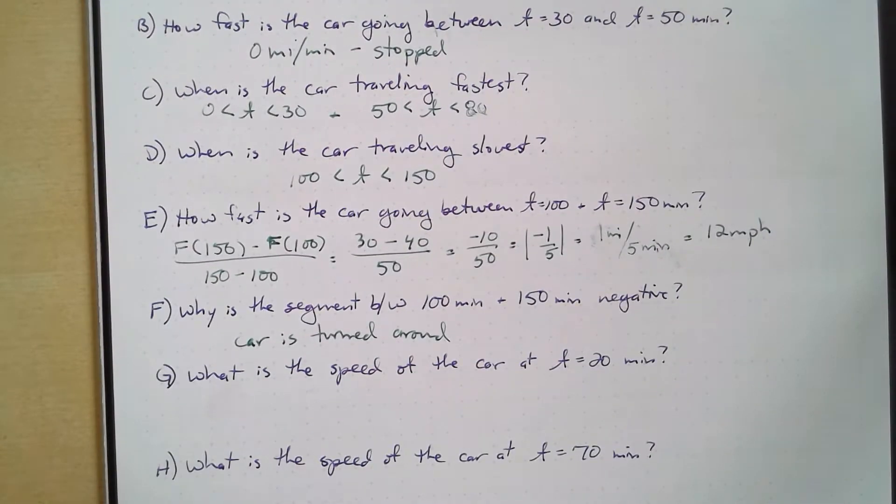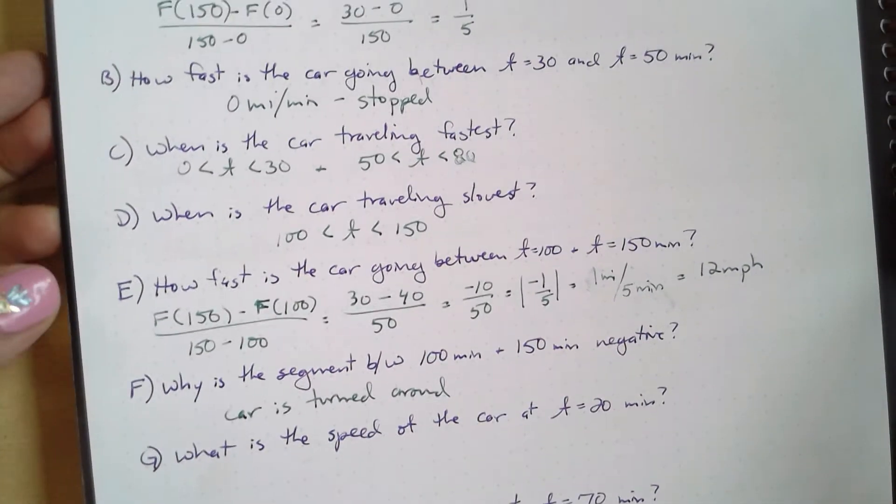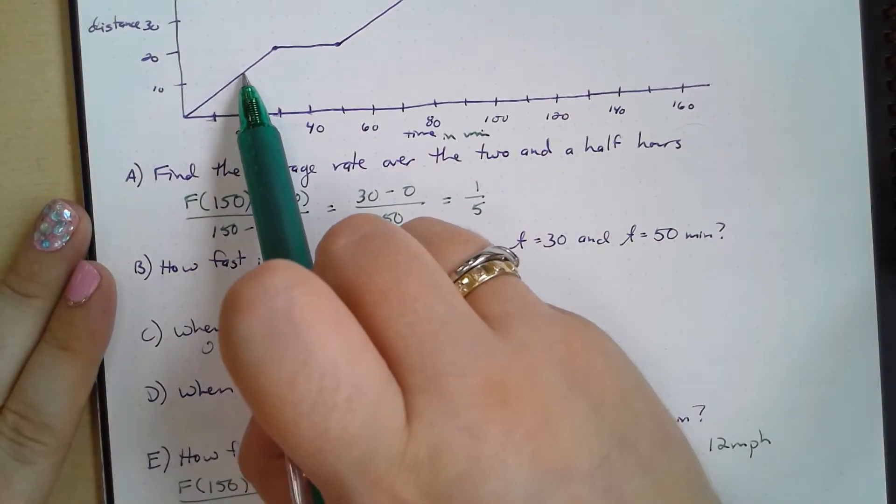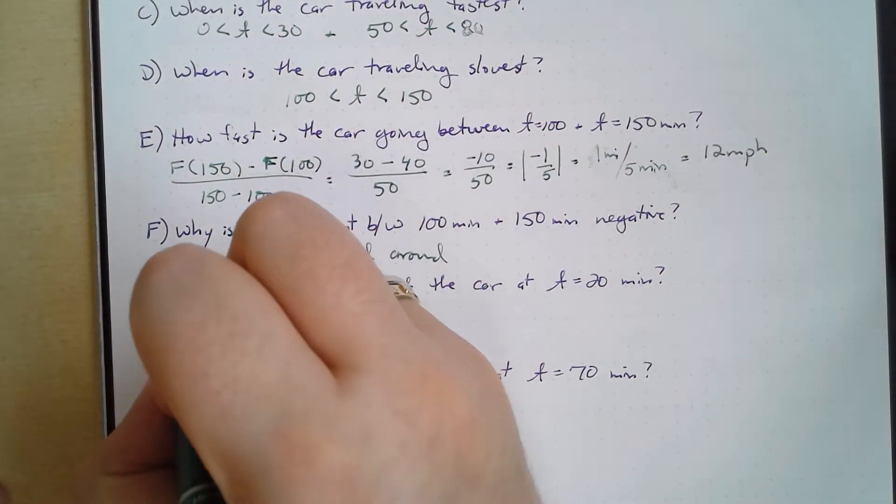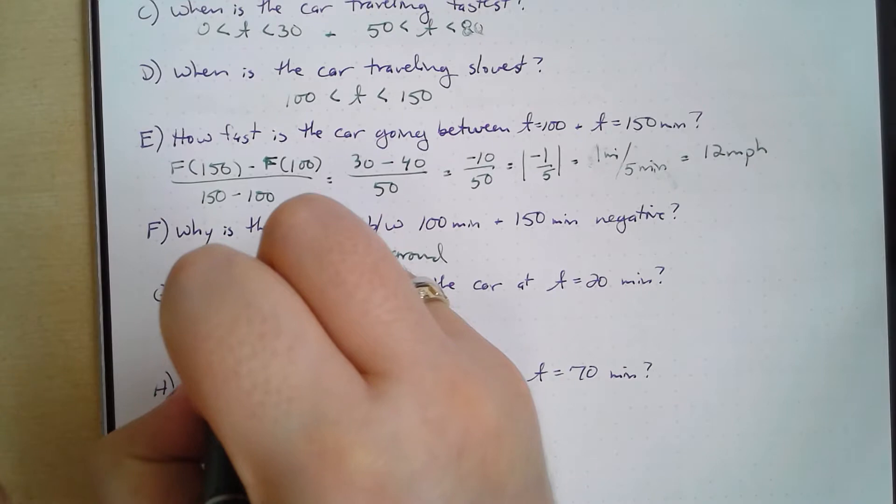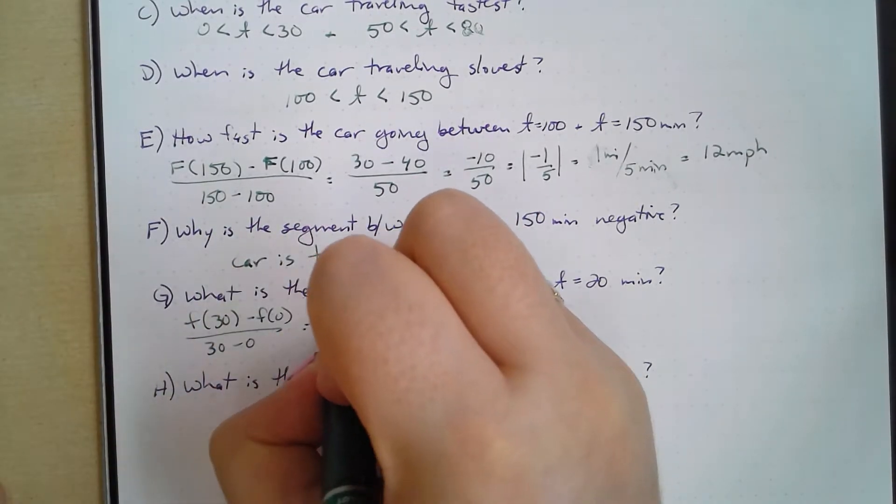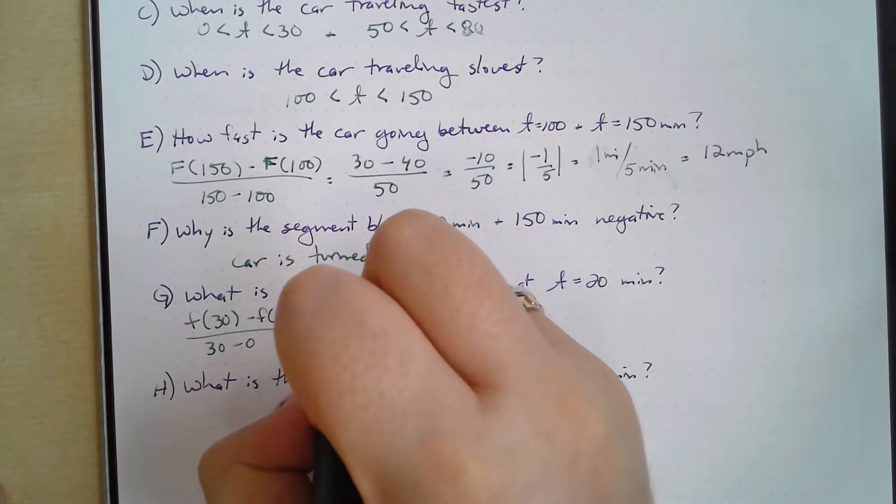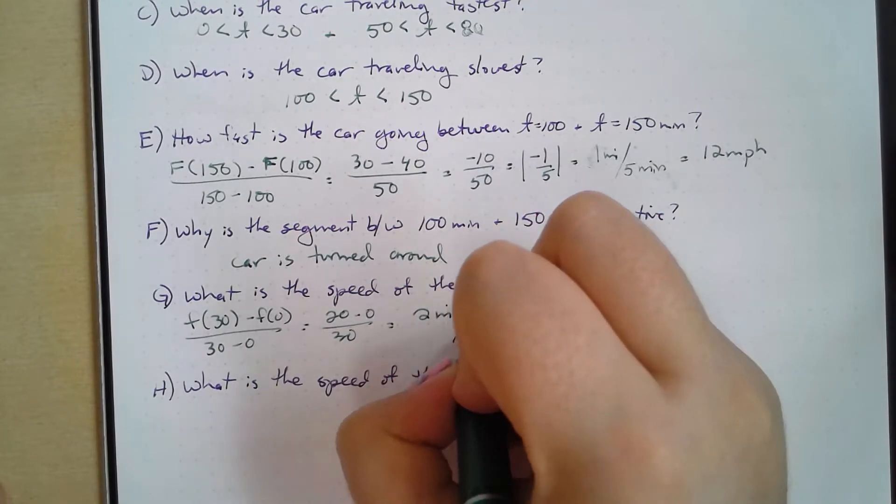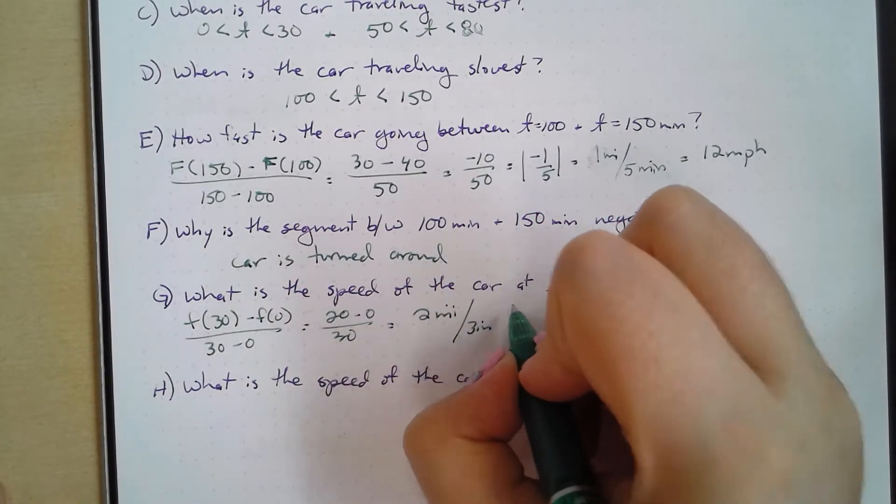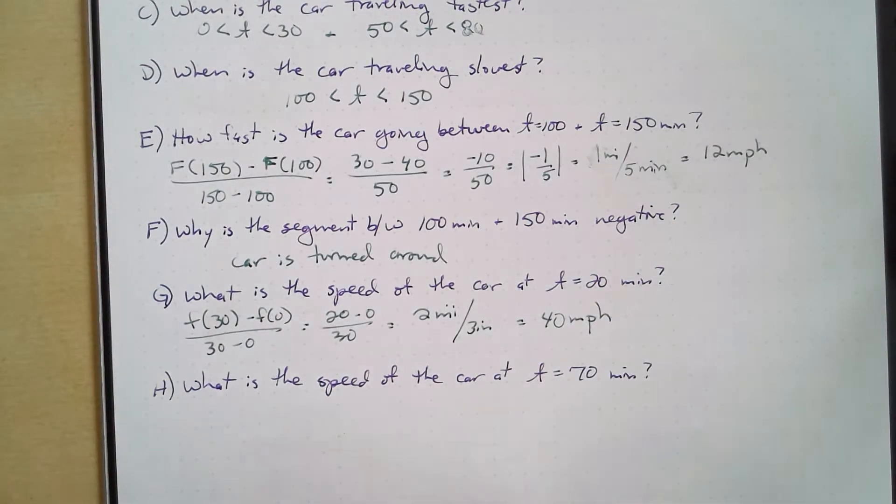Well, what about speed of the car at t equals 20 minutes? What's going on there? Well, if t equals 20 minutes, right, we're going to take f(30) minus f(0) over 30 minus 0. So that is equal to 20 minus 0 over 30, which equals 2 miles per 3 minutes. And if I multiply that by 60 minutes, I get 40 miles per hour, right?